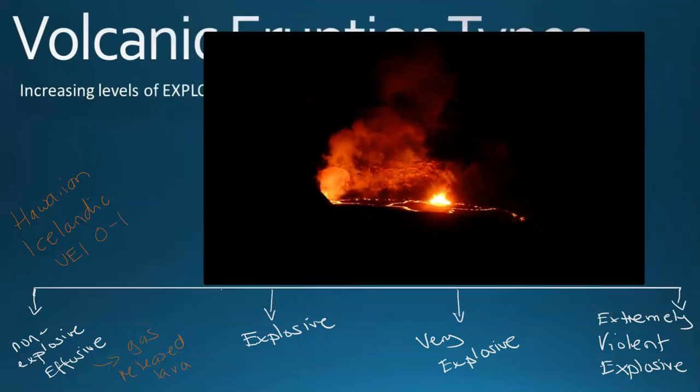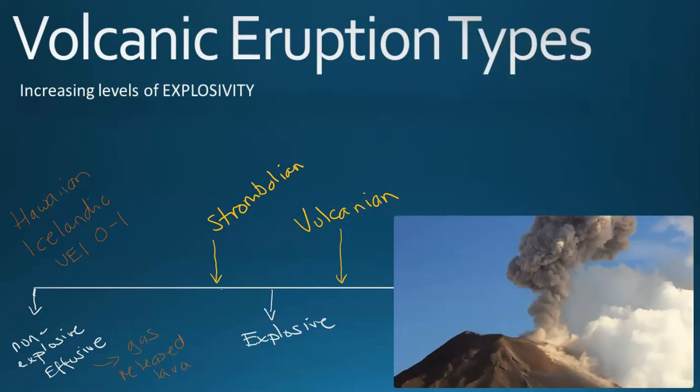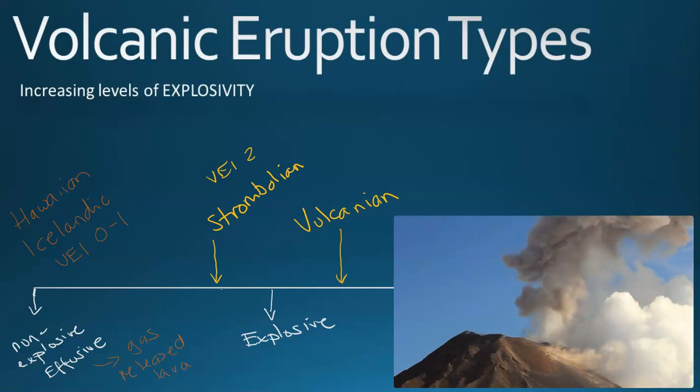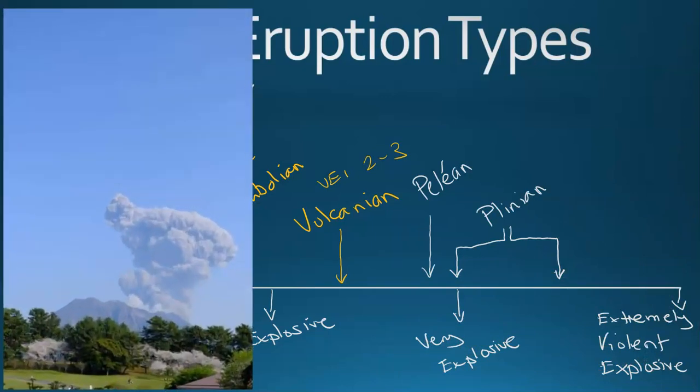Then we've got two eruption types: Strombolian and Vulcanian. Strombolian is usually on the more non-explosive side and Vulcanian is getting into the more explosive. In terms of the VEI, Strombolian would be around a two, and Vulcanian will be a VEI of two to three. The next set of eruption types is going to be more in the explosive range, a very explosive range.